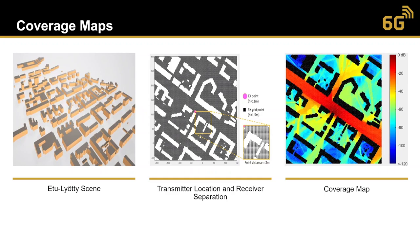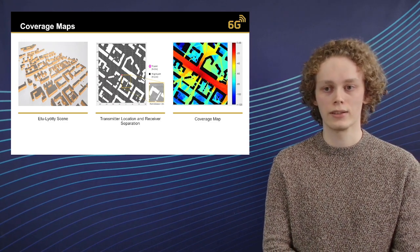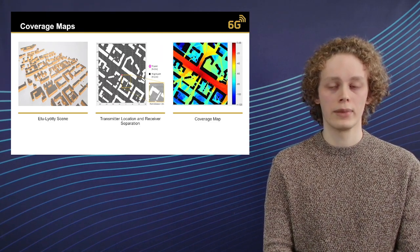We can also use raytracing to generate coverage maps. Here on the left we have a picture of an environment, in the middle picture we have the transmitter point and a discretization of receiver points, and on the right we have a heat map describing the signal strength. We can see that line-of-sight connections are very strong. This has many applications, for example when studying how reconfigurable intelligent surfaces behave — we can generate these coverage maps and see how they impact the gain.